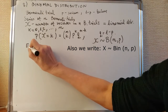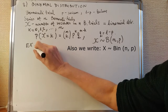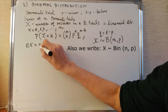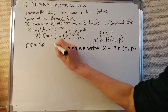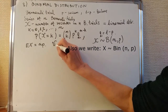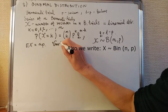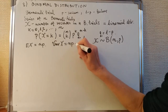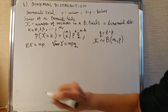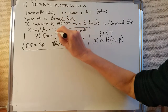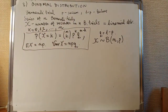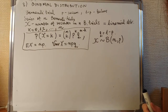The expected value equals n times p, and the variance is npq. I think this is worth remembering. That's the binomial distribution — the most characteristic thing.